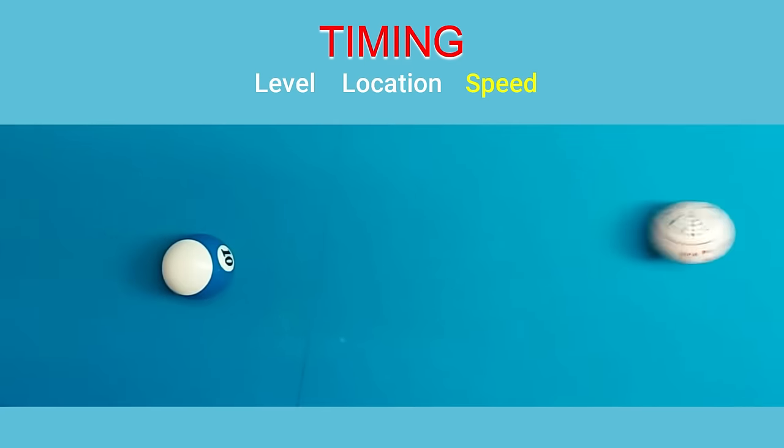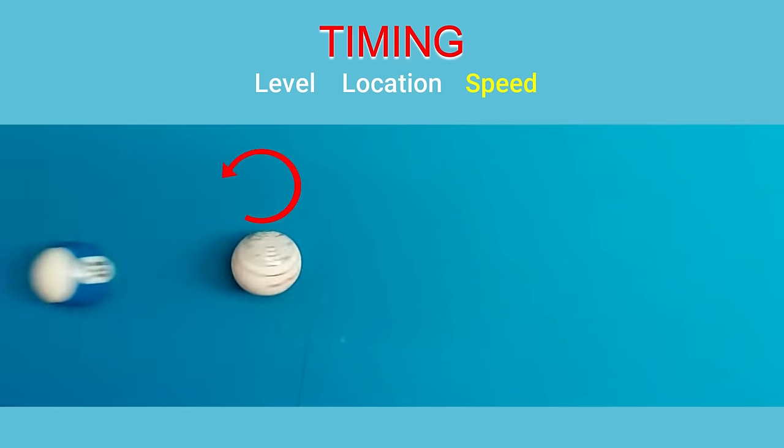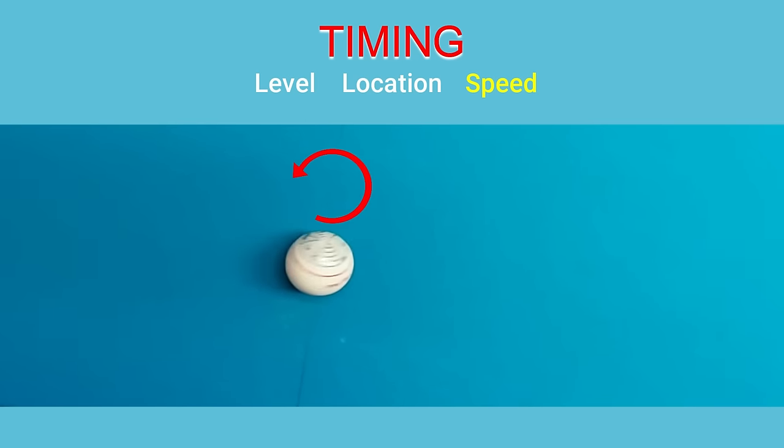Notice the cue ball is spinning rapidly after contact with the object ball, but the rotational energy quickly slows due to friction with the cloth and then becomes directional energy back towards the shooter. The cue ball is now rolling instead of spinning.